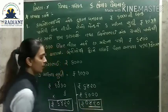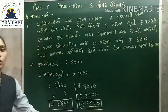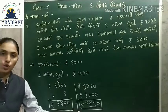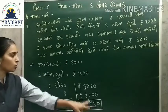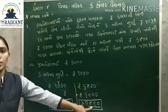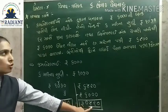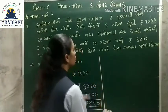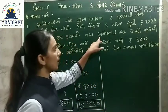કમલેશ ભાઈ એ 6,420 - 6,000 = 420 રૂ. ની લોન ઉપર વ્યાજ ચૂકવ્યું. હવે આગળ જોઈએ - નિમેશ ભાઈ.